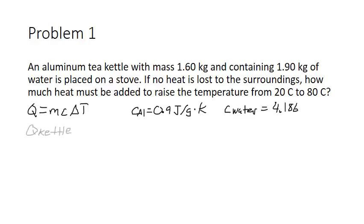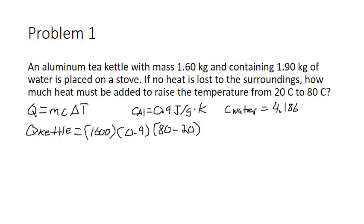First, we find the q of the kettle specifically. Notice that the mass is 1.6 kilograms, but the specific heat units are per gram, so you have to convert kilograms to grams by multiplying by 1000, giving 1600 grams. Multiply by the specific heat of aluminum, then plug in the change in temperature from 20 to 80 degrees Celsius.